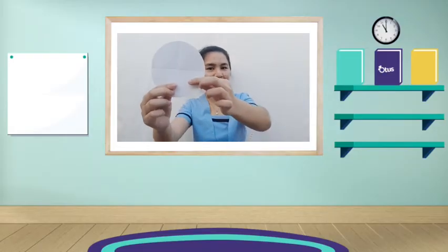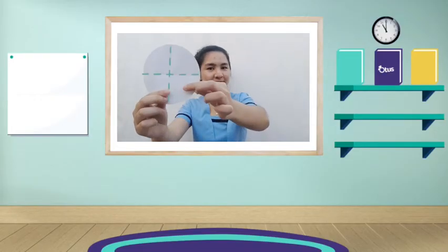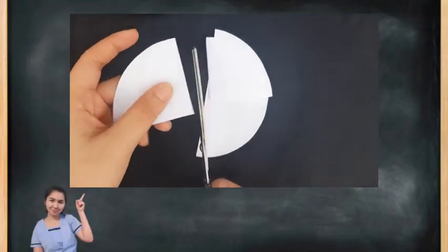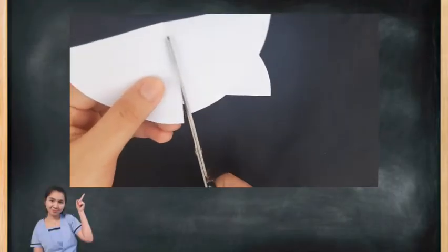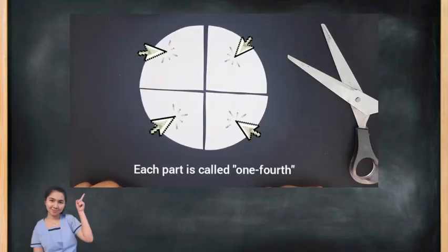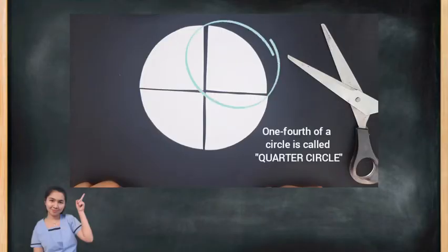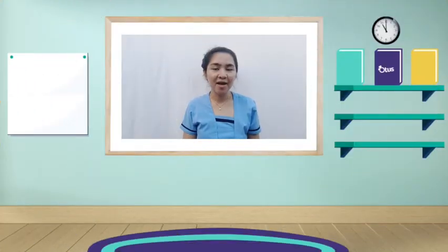Next, let's proceed to the other circle which has two perpendicular diameters. When we cut the circle into four equal parts, each part is called one-fourth, and one-fourth of a circle is called a quarter-circle.